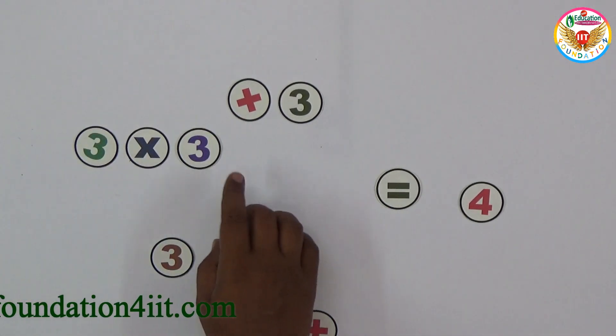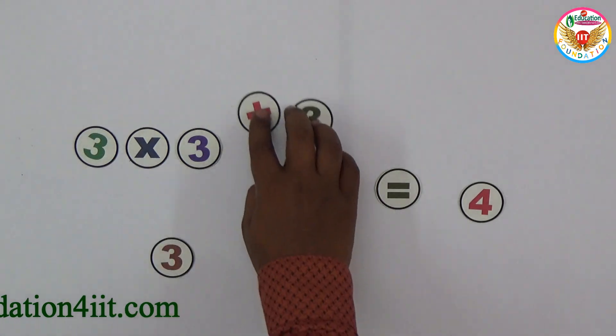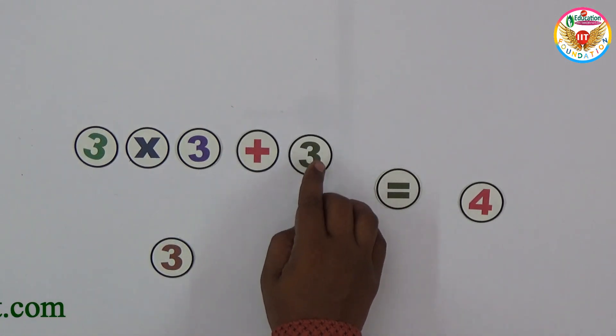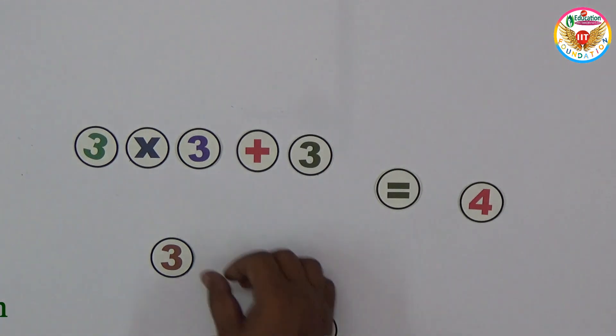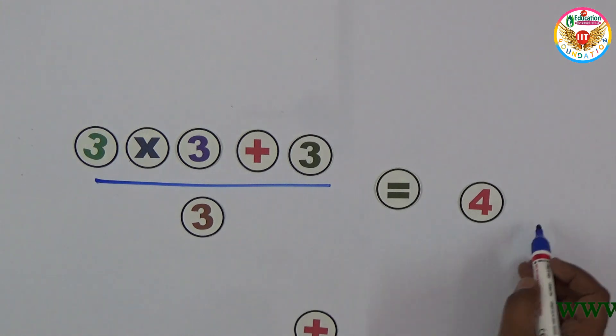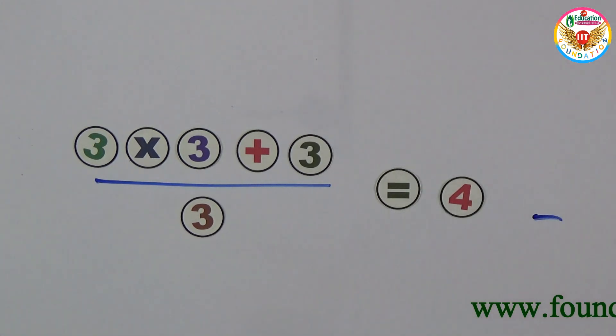3×3 is 9, and 9+3 is 12. Then 12 divided by 3. 12 divided by 3 is equals to 4. That is equal to 4.